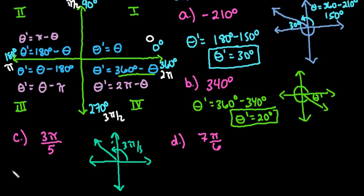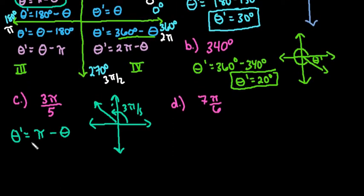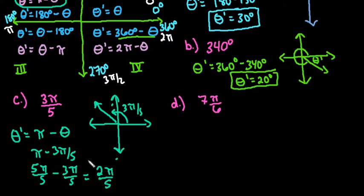Alright, so to find theta prime, we would just take this rule here, where we take pi minus theta. Sorry, mixing up my Greek letters, not trying to confuse you. Alright, so if I plug this in, we would take pi minus 3 pi over 5, and if you just think about this in terms of fifths, 1 pi is really 5 fifths, so that makes it a little bit easier to do the math, and we would end up with 2 pi over 5 as our final answer.